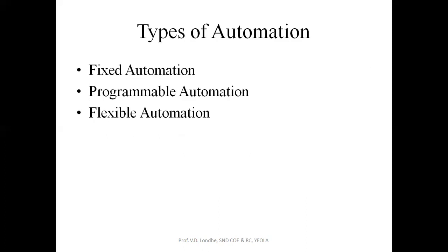Now, what are the different types of automation? There are three types of automation: the first is fixed automation, the second is programmable automation, and the third is flexible automation. We will now see each type in detail.